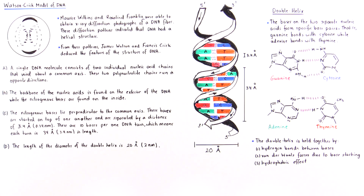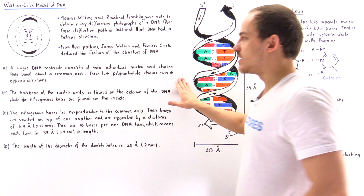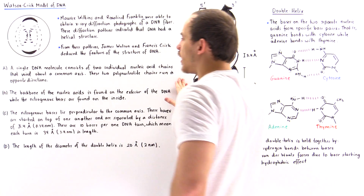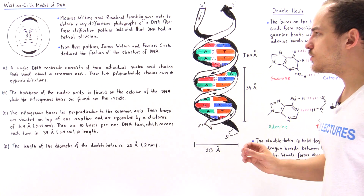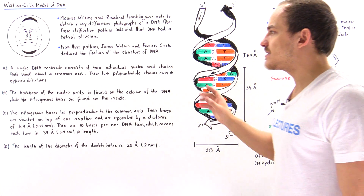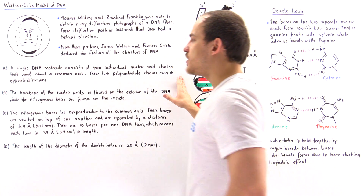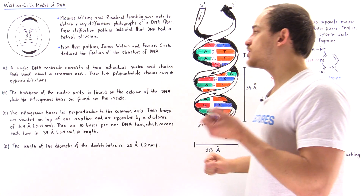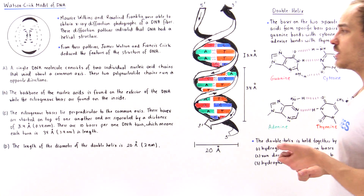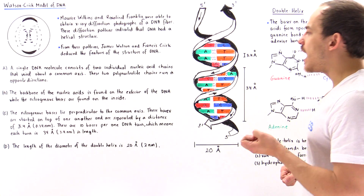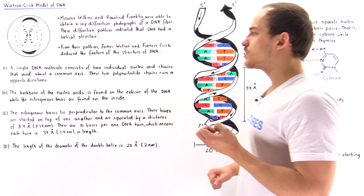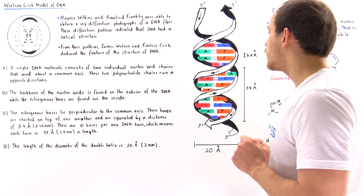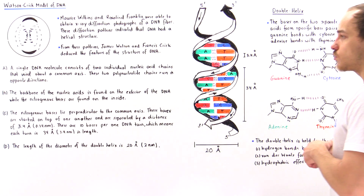This is point number one: a single DNA molecule consists of two individual nucleic acid chains that wind about a common axis. These two polynucleotide chains run in opposite directions — so although they are parallel, they run in opposite directions.